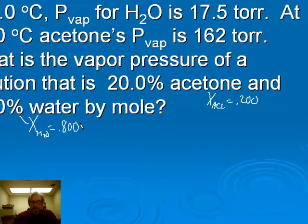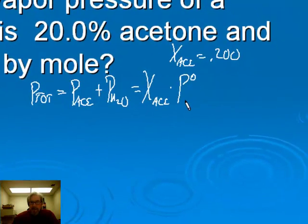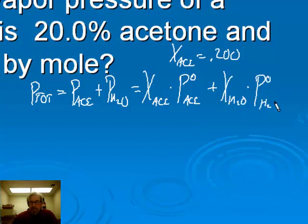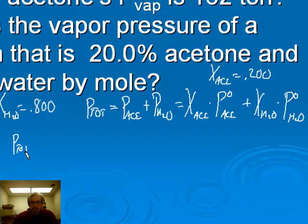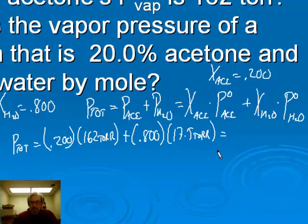The total pressure of the solution equals the partial pressure of acetone plus the partial pressure of water. That equals the mole fraction of acetone times the pure vapor pressure of acetone, plus the mole fraction of water times the pure vapor pressure of water. So total pressure equals 0.200 times 16.2 torr, plus 0.800 times 17.5 torr. When we multiply and add this all up, we get 46.4 torr as the total pressure.